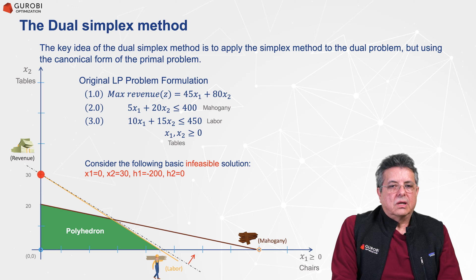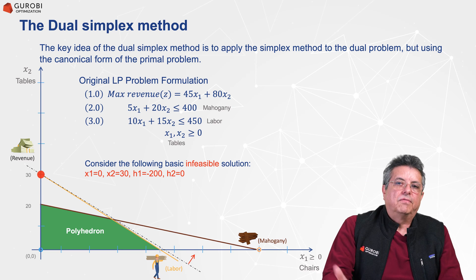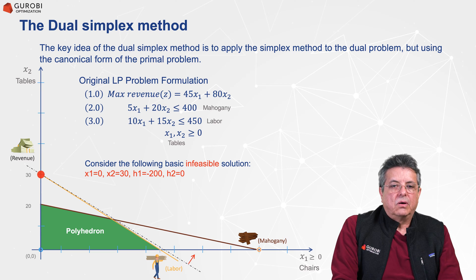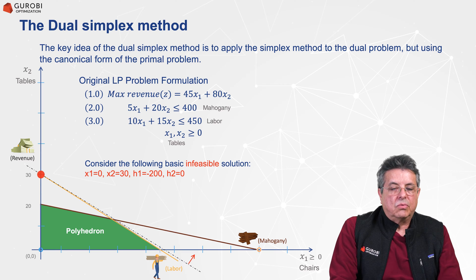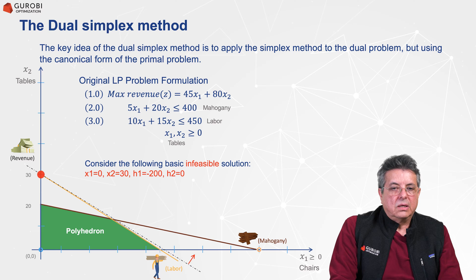Let's consider the following example. We have the furniture problem where we want to maximize the total revenue of a production plan. We have two constraints — mahogany constraints and labor constraints — and we are going to build tables and chairs.